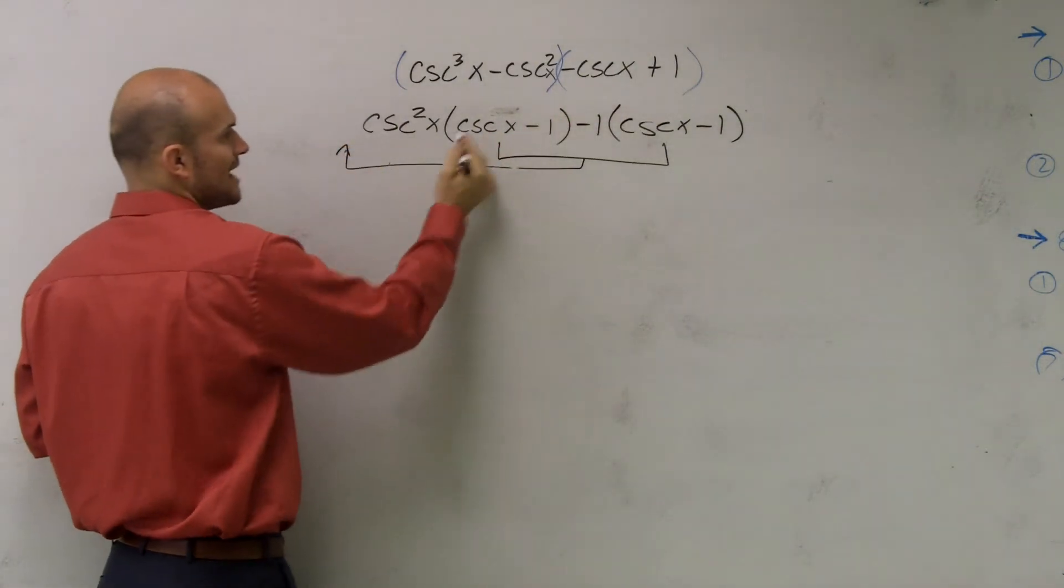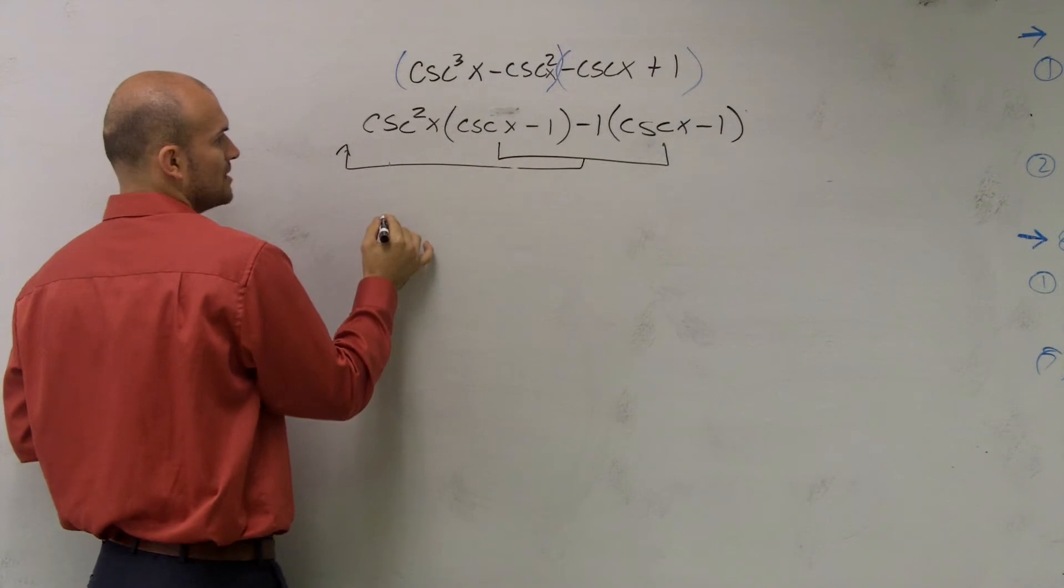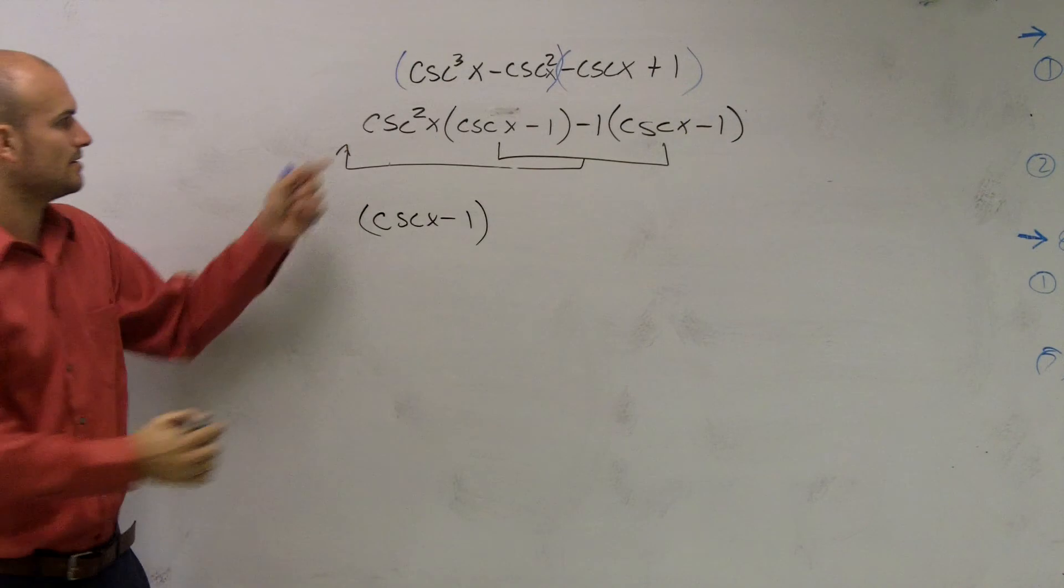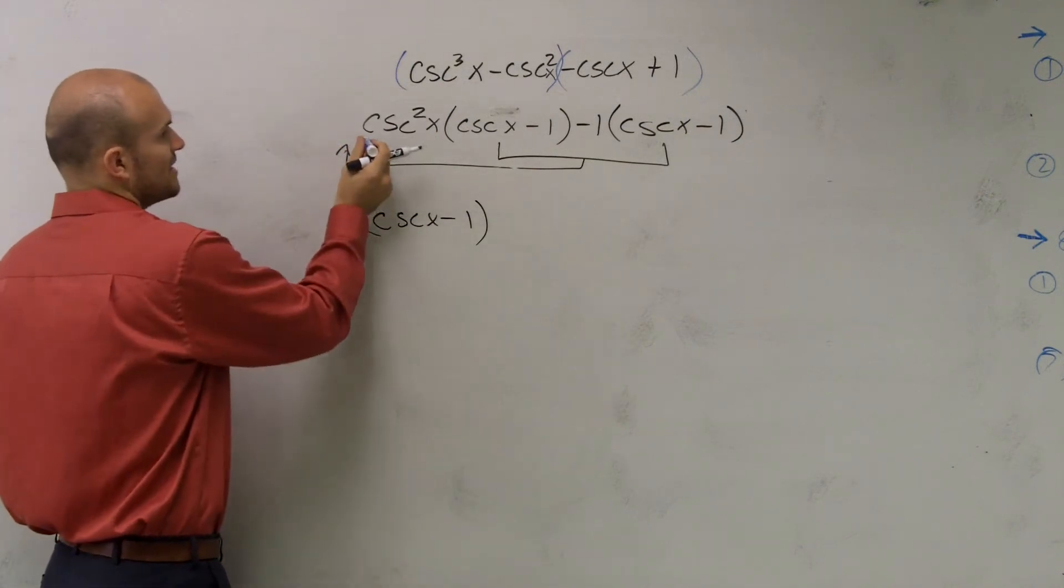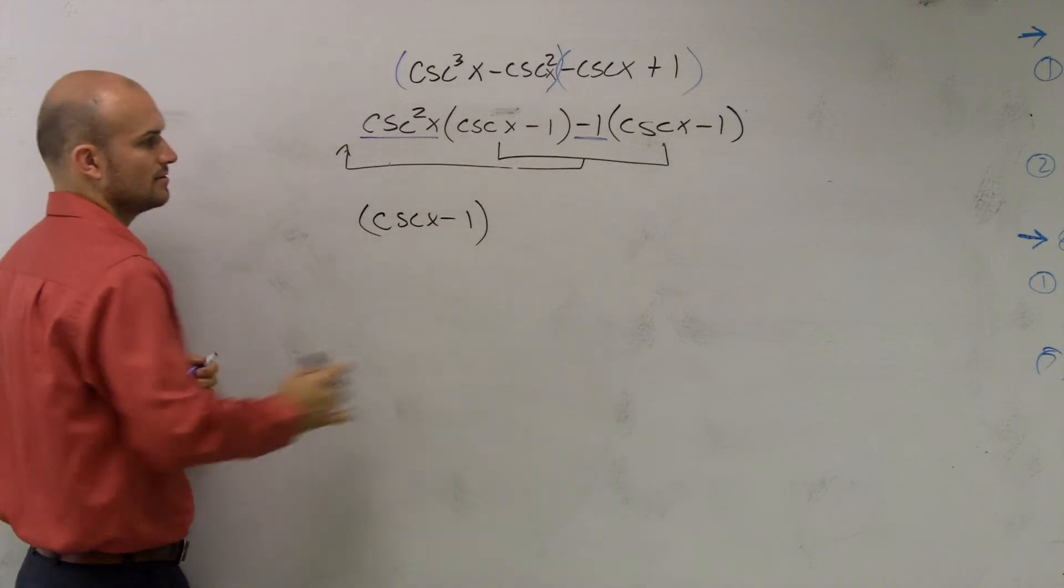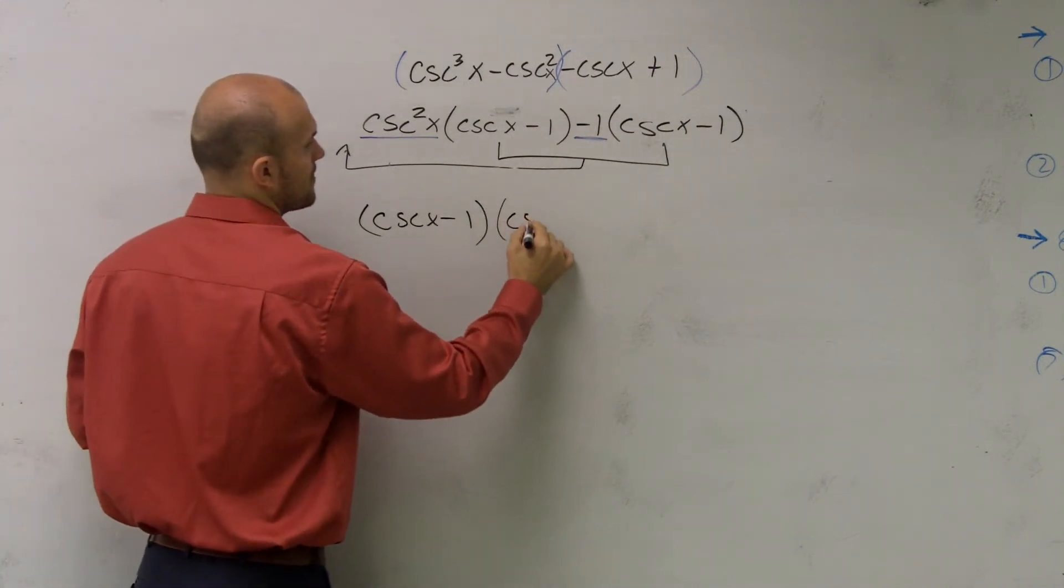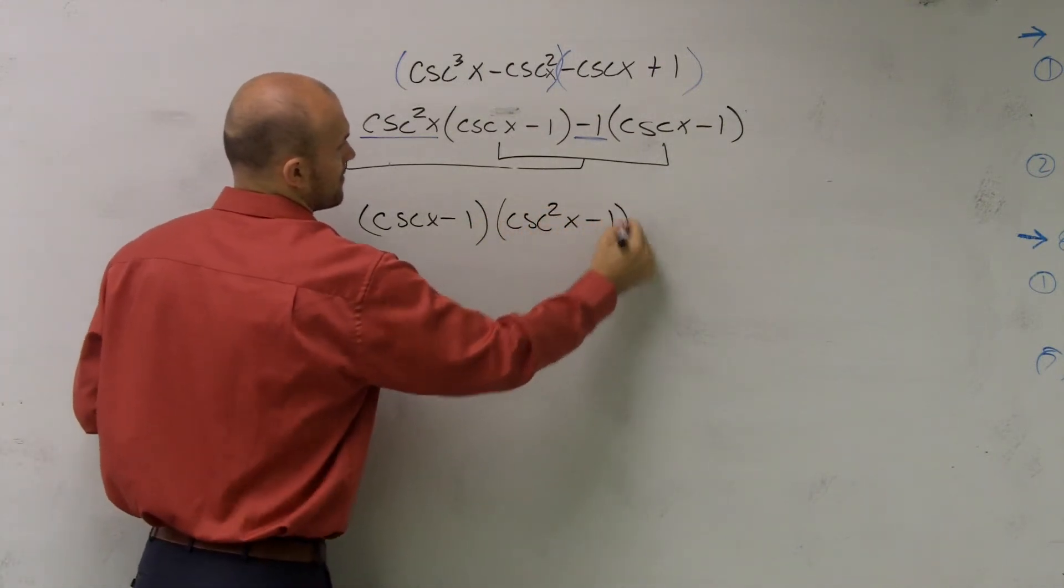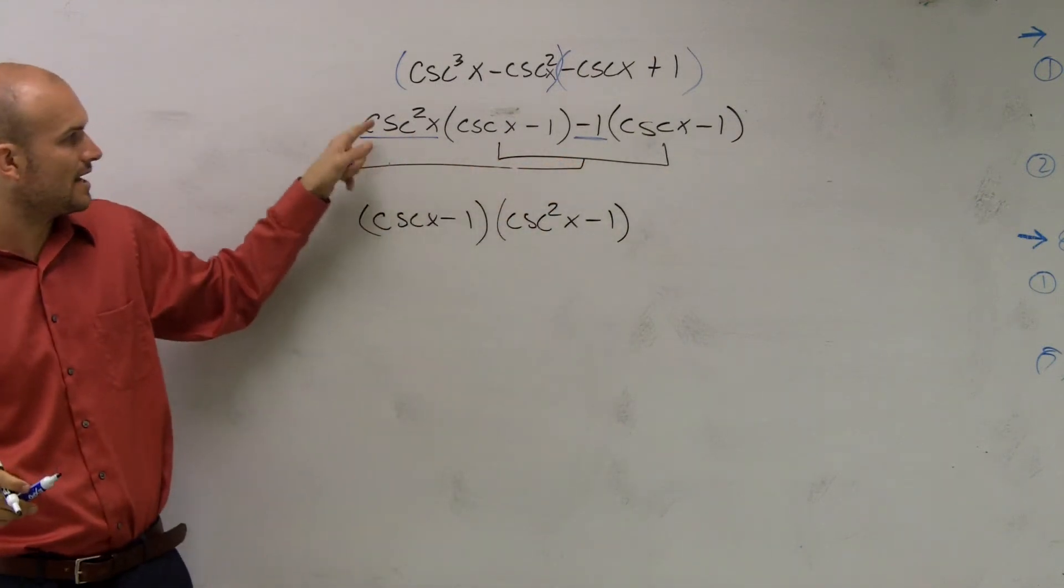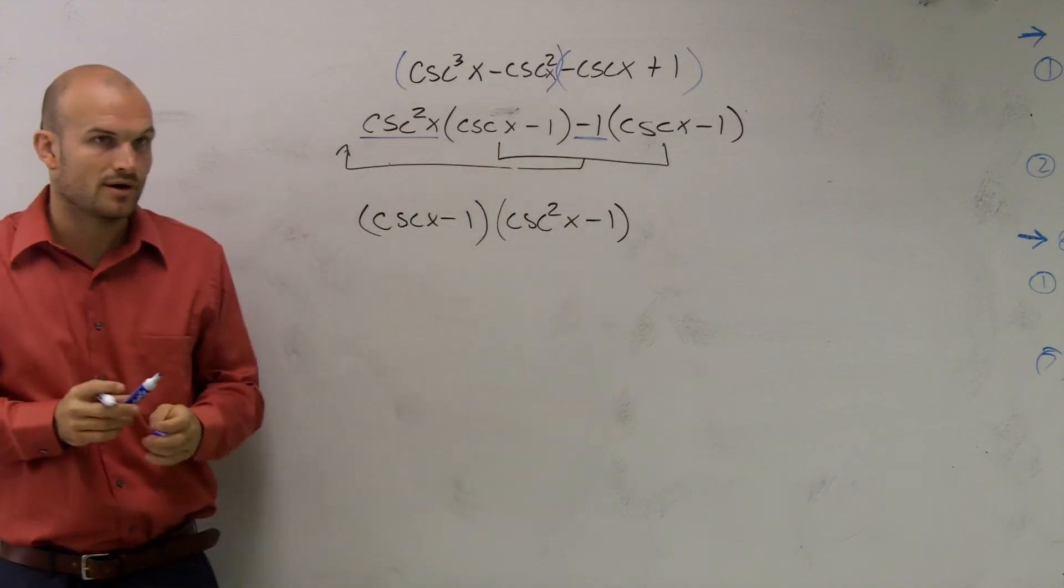So when I factor this out of the previous terms, I'm left with cosecant of x minus 1, which I factor out. Then what's left over? What's left over is cosecant squared minus 1. So I write that as my other factor. So what I did was I factor this out, and I'm left with cosecant squared of x minus 1.